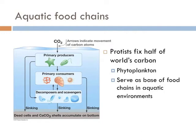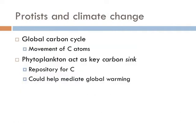Phytoplankton are protists that float on the top layer of the ocean and convert light energy from the sun into chemical energy via photosynthesis. This provides the energy for almost all ocean life forms, from unicellular herbivores to whales and even the great white shark. In the global carbon cycle, phytoplankton are the most important factor — they are the primary carbon sink, converting carbon dioxide into sugar molecules via photosynthesis. The more carbon dioxide exists in the atmosphere, the more carbon available for phytoplankton to convert into sugar.